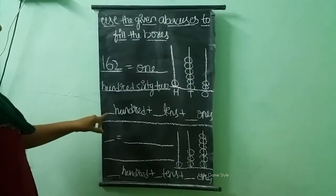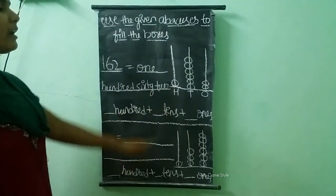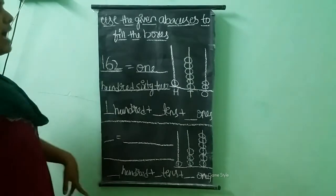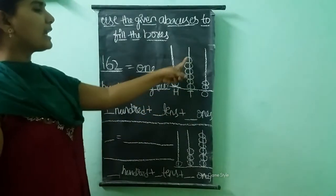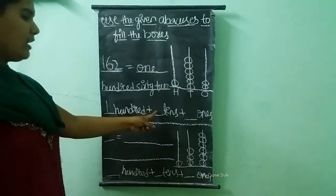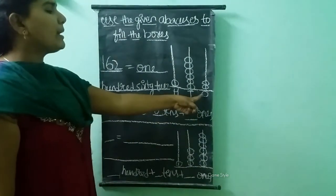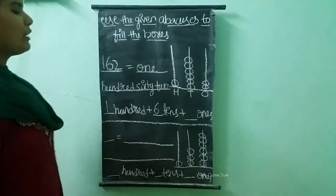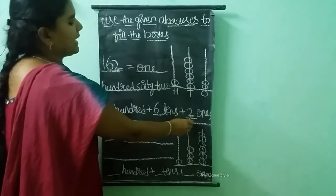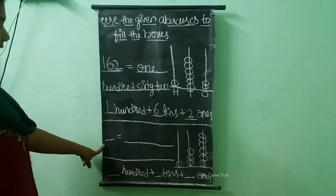And then we need to write the place values also. So here in hundreds place, how many beads are there? Only one bead is there, so in hundreds place we write one. In tens place, how many beads are there? Six beads are there, so we write six. And in ones place, how many beads are there? Two beads are there, so we write two. This is how we write the number one hundred and sixty-two.